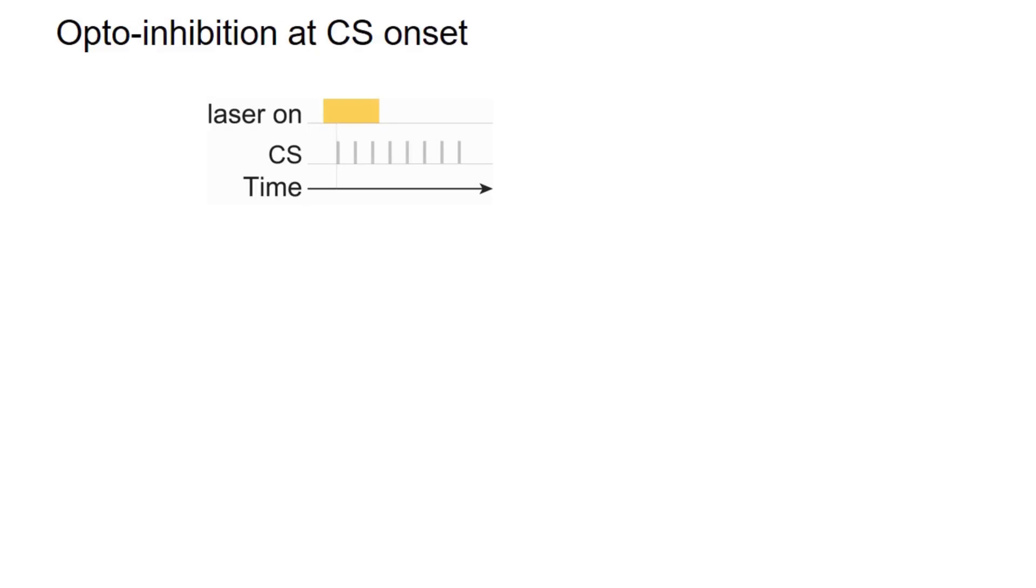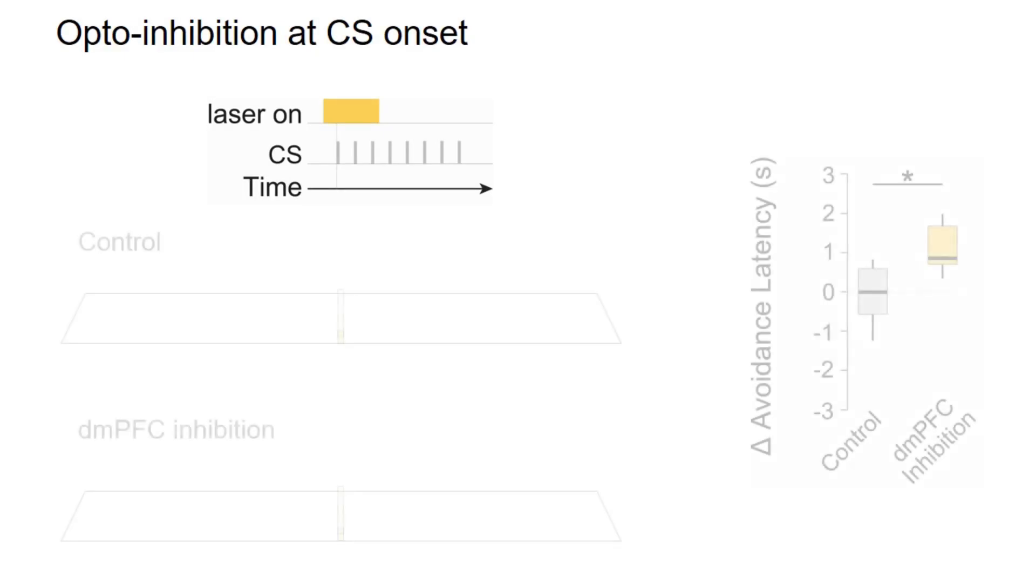Finally, to study the causal role of the dorsal medial prefrontal cortex activity in avoidance behavior, we perform time-specific inactivations using optogenetics. When we briefly inactivate the PFC at the onset of the CS, we induce a delay in the time at which avoidance responses are performed.